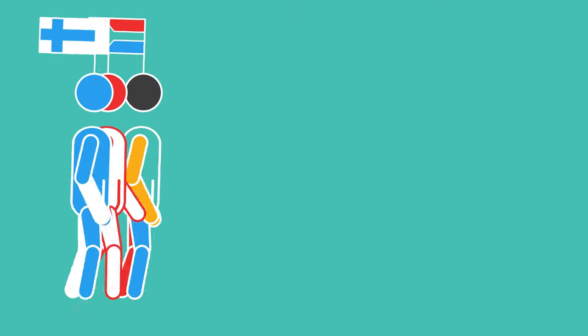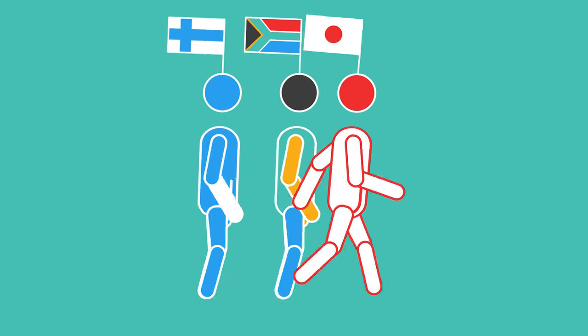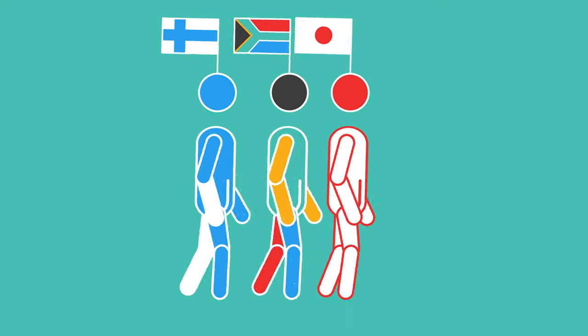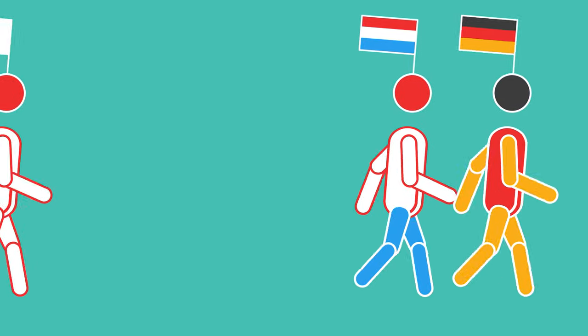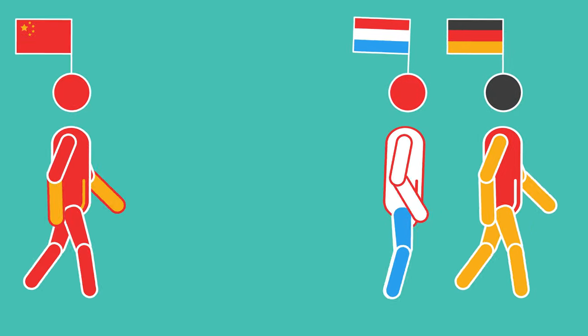Fun fact, did you know that the average walking speed of a person varies from country to country? A survey found that some of the fastest walking countries include Germany and the Netherlands, while some of the slowest include China and Austria.